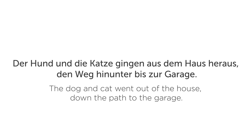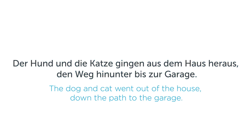Compare the following sentences. In German: 'Der Hund und die Katze gingen aus dem Haus heraus, den Weg hinunter bis zur Garage.' In English: 'The dog and cat went out of the house down the path to the garage.' Dog, cat, house, path, and garage aren't capitalized in English. But the equivalent words Hund, Katze, Haus, Weg, and Garage are capitalized in German, because they're all nouns and all nouns in German are capitalized.